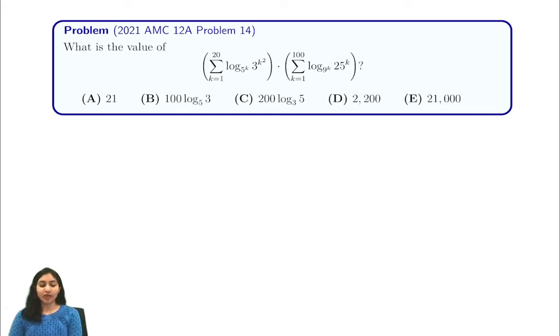Hi everyone, in today's video we're going to be discussing 2021 AMC 12A Problem 14 and the question asks us the value of this complicated logarithmic expression. At first glance this problem seems really intimidating, so we want to break it down part by part. First let's look at this first parentheses, and it's a summation from k equals 1 to 20 of the log of 5 to the power k of 3 to the k squared.